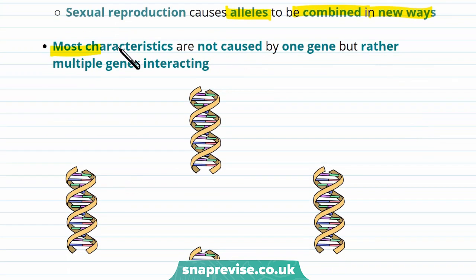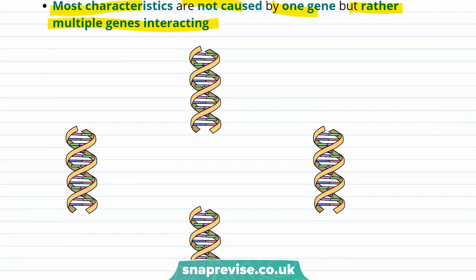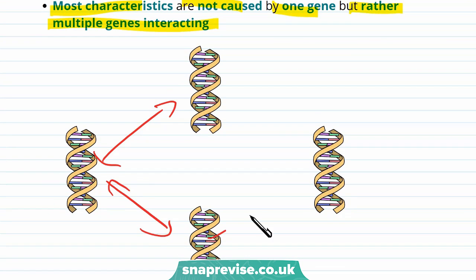Most characteristics aren't caused by one gene, but rather multiple genes interacting, and these all interact to give the observed characteristic.